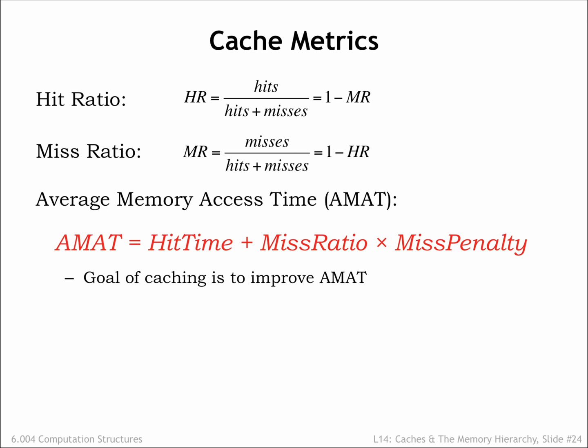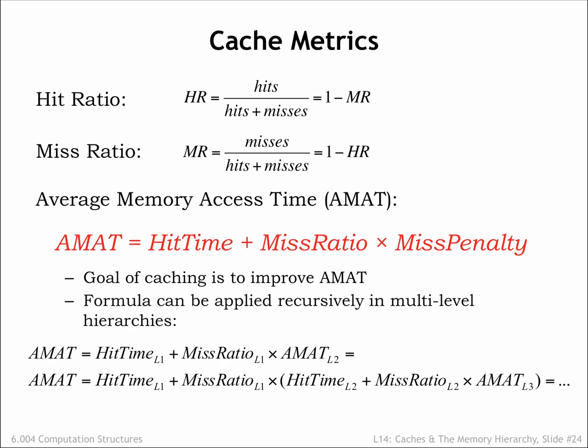The lower the miss ratio, or equivalently the higher the hit ratio, the smaller the average access time. Our design goal for the cache is to achieve a high hit ratio. If we have multiple levels of cache, we can apply the formula recursively to calculate the average memory access time at each level of the memory hierarchy. Each successive level of the cache is slower, i.e. has a longer hit time, which is offset by the lower miss ratio because of its increased size.